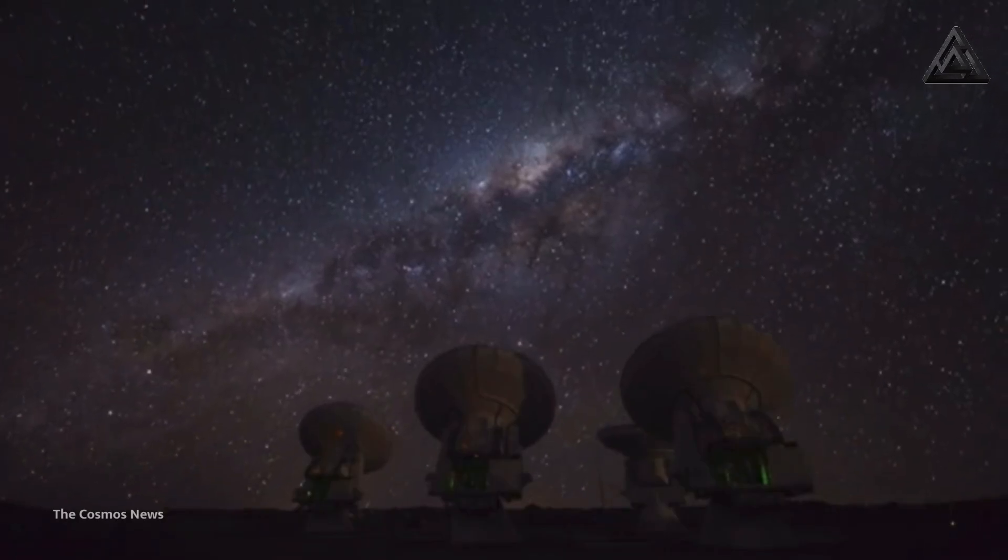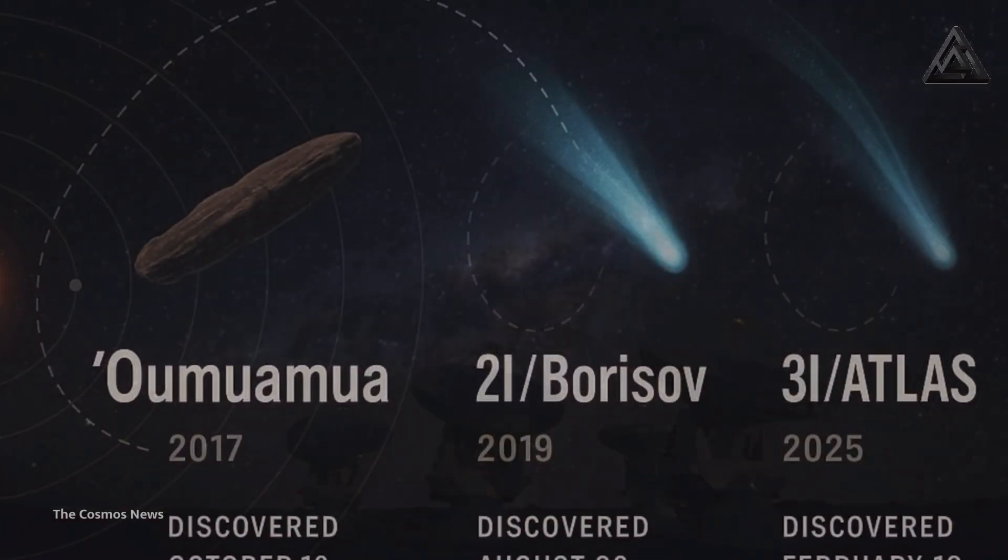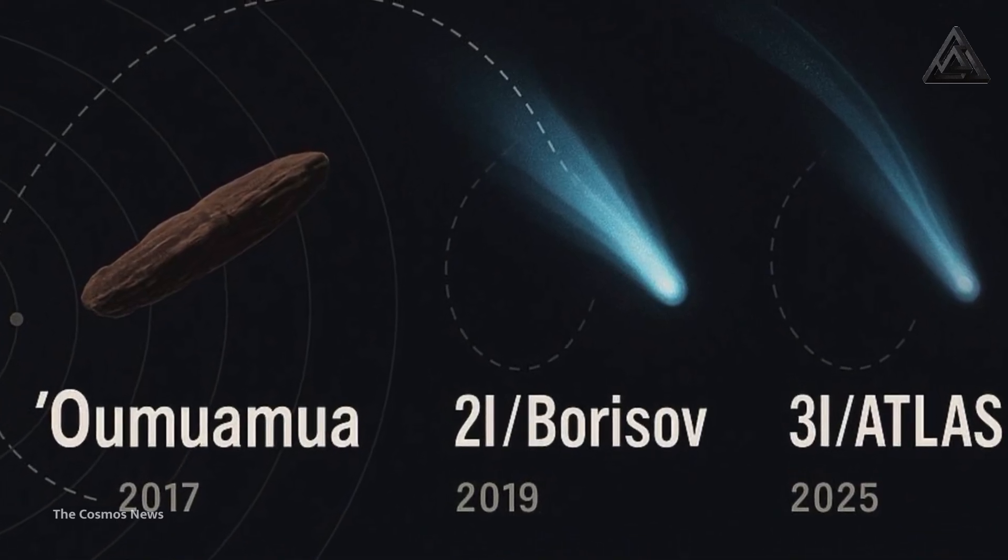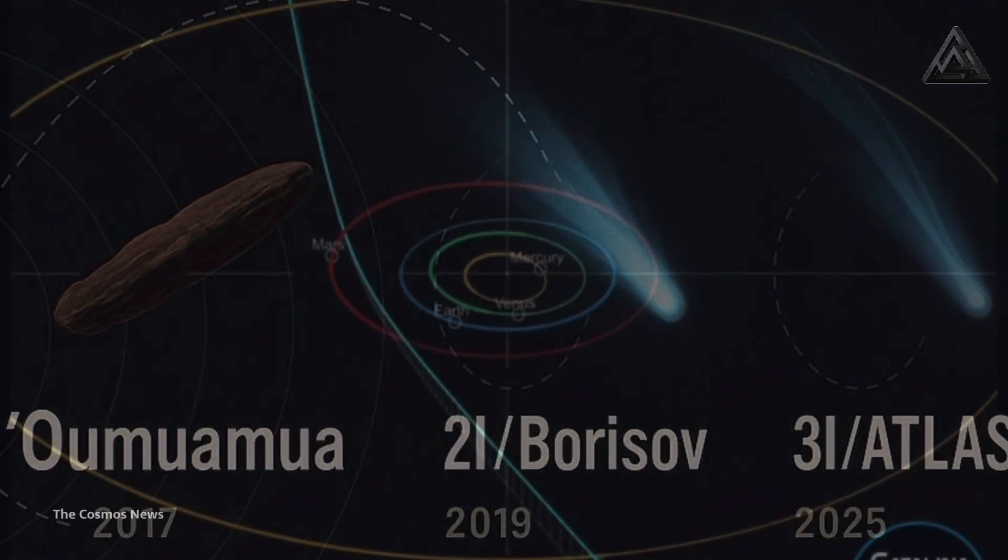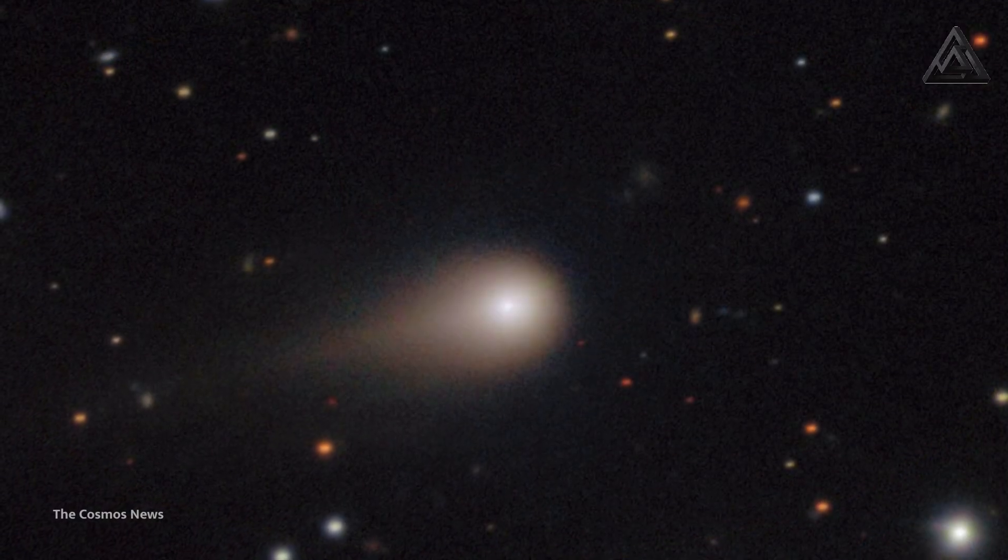Observations from the Major Planet Center and NASA confirm that 3i Atlas is the third known interstellar object, after 1i Oumuamua and 2i Borisov. Its trajectory shows an eccentricity around 6 and an incoming speed of about 57 kilometers per second, large enough that it cannot be bound by the sun's gravity.